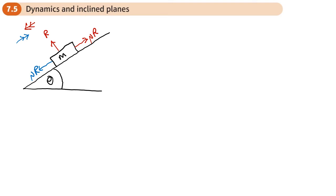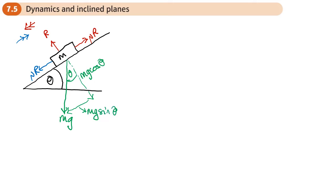You'll need to put in the mass or the weight, so you'll have mg, and work out its components. If the angle is θ, this would be mg cosθ and this would be mg sinθ. You may have other forces — things like pulleys, connected particles. Remember that these questions are often a combination of SUVAT and F = ma, and the connection between the two is acceleration.